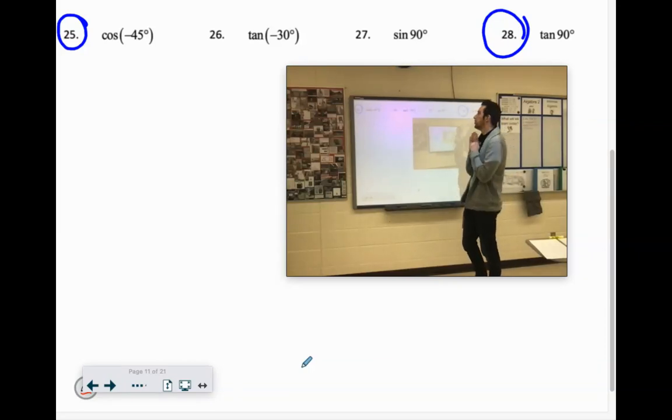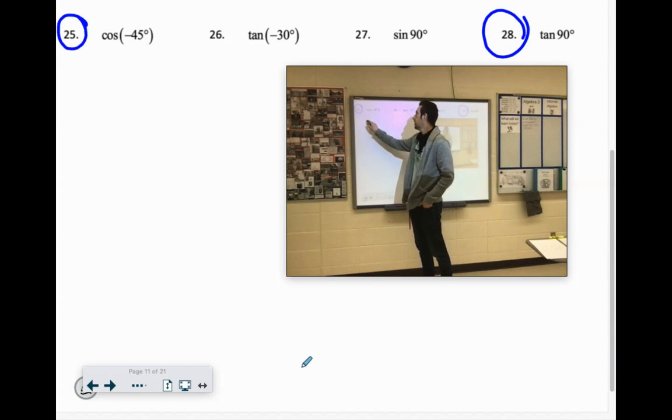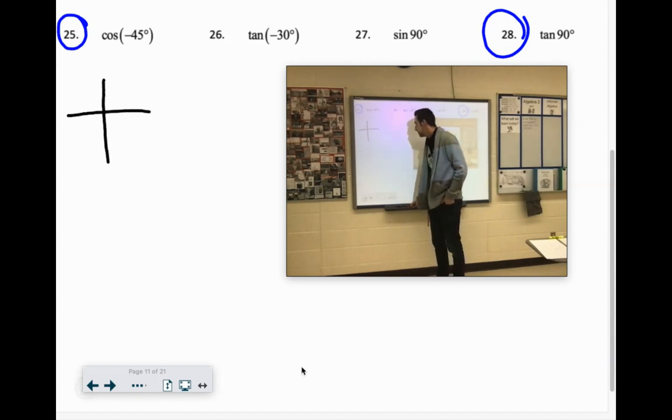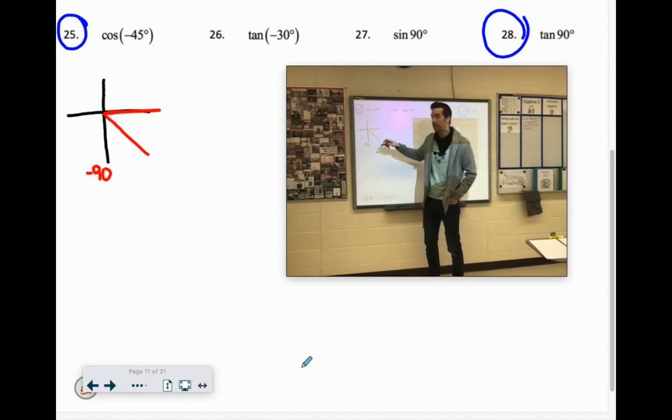All right, we're going for the cosine of negative 45. So think of where we would be here. This would be negative 90, so we'd be halfway there. We dipped 45 degrees that way, so our reference angle is going to be 45 degrees.